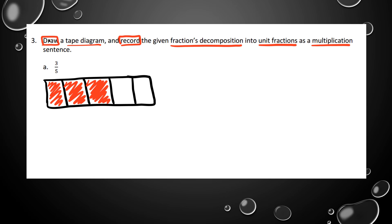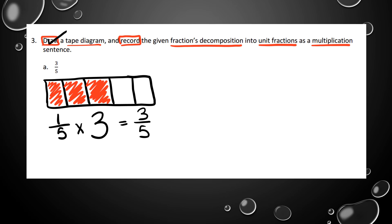I can check off 'draw' since that's done. Next, record the decomposition into unit fractions as a multiplication sentence. Working in fifths, the unit fraction is one-fifth. I need one-fifth times something to equal three-fifths. We're multiplying by a whole number today, so one-fifth times three equals three-fifths.